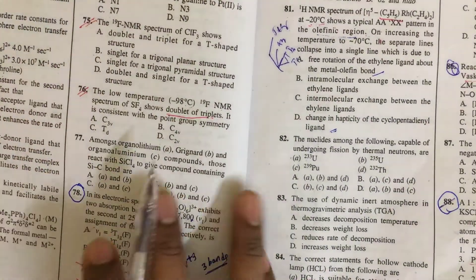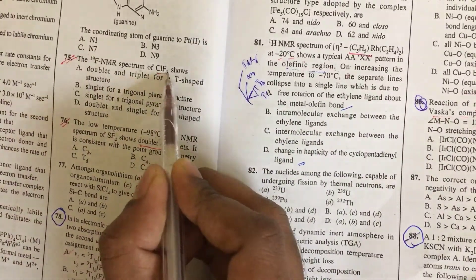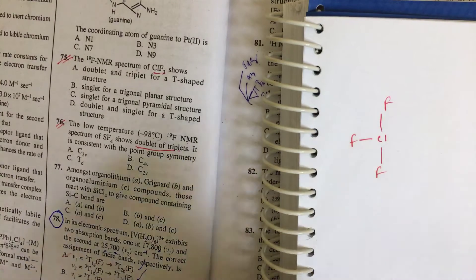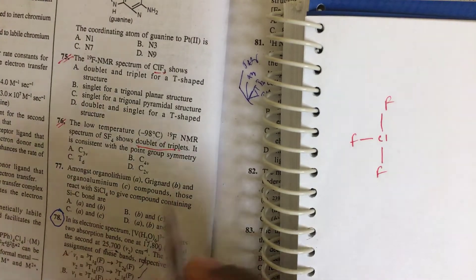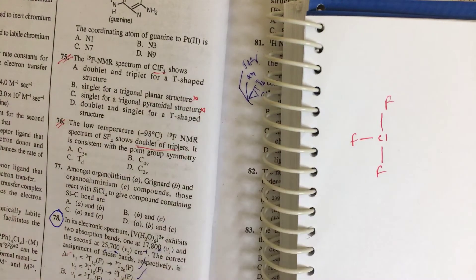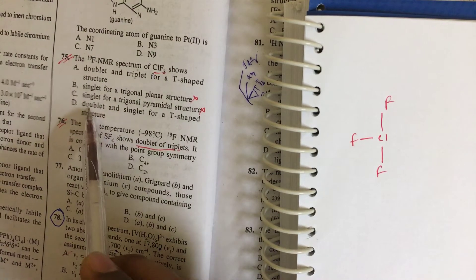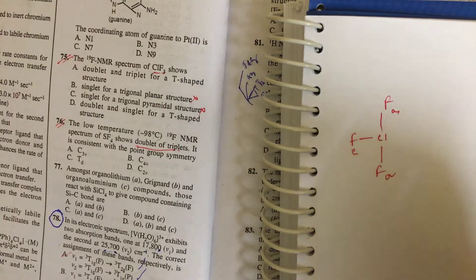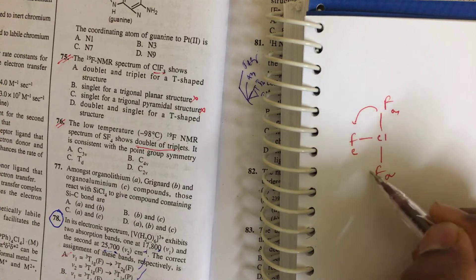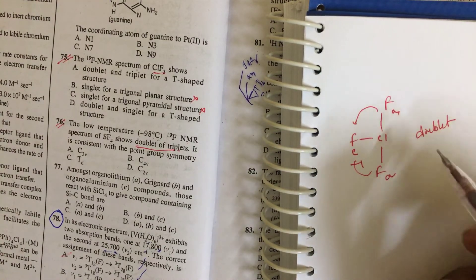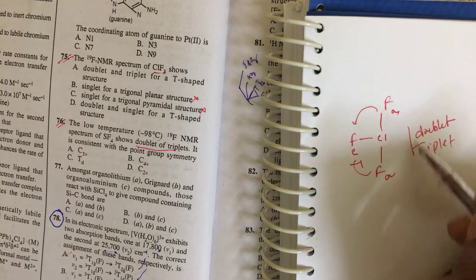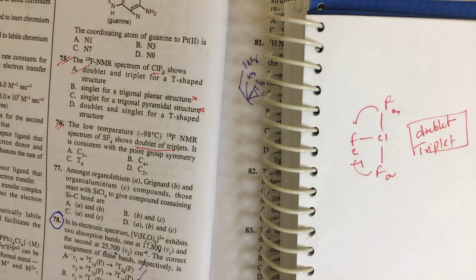For ClF₃, which is T-shaped: by elimination we remove options B and C. In option D, a doublet of singlet is proposed, but that's not possible. The T-shaped structure has two axial and one equatorial fluorine. The equatorial fluorines couple with axials to give a doublet, and axials couple with equatorial to give a doublet. So the answer is a doublet of triplet for the T-shaped structure.